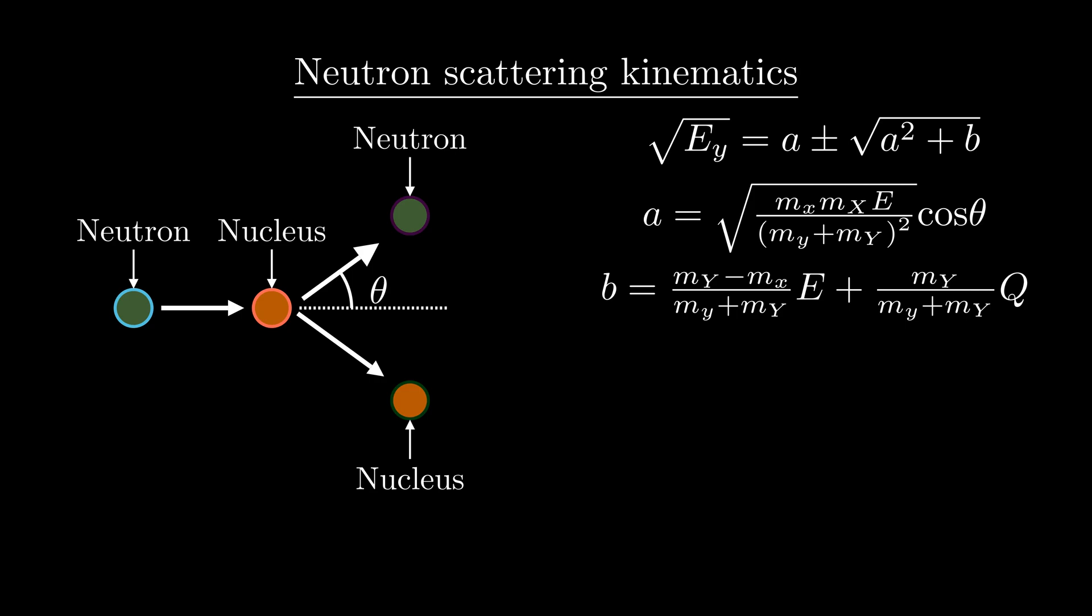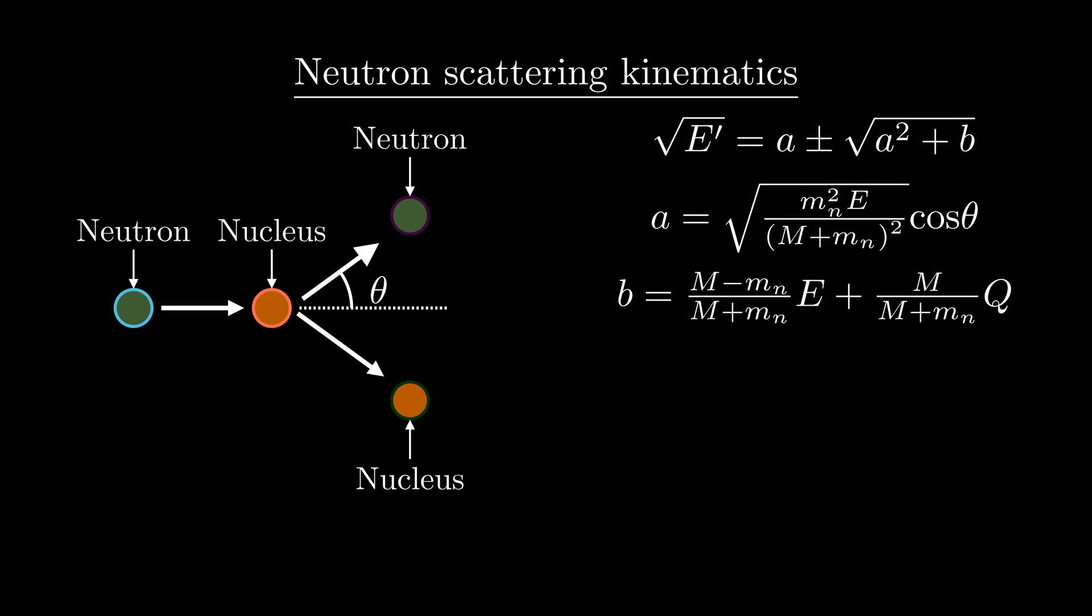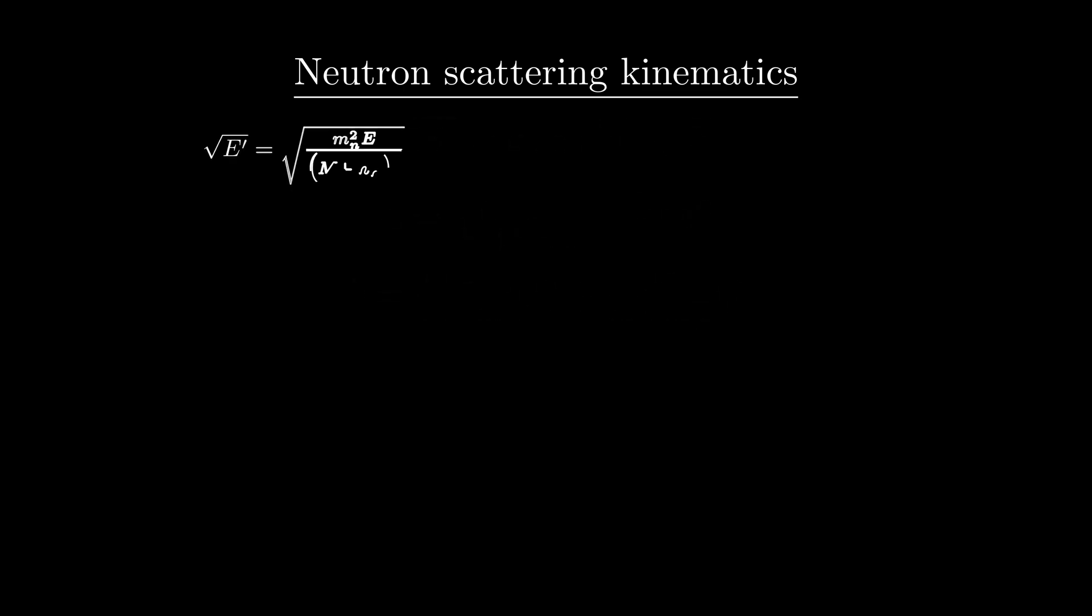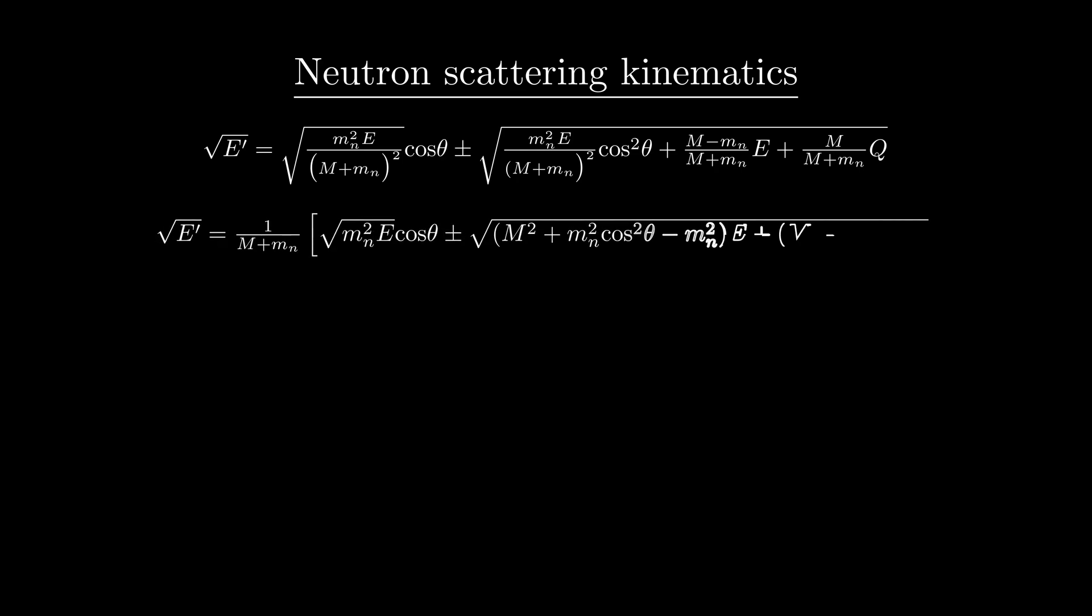m sub n is our symbol for the mass of a neutron, and big M is the symbol for the mass of the nucleus. Let's plug in our new forms for a and b, and we get this ugly equation, but we can do a little simplification to get things to look a bit nicer. First, we can factor out a 1 over M plus m sub n from the right hand side of the equation, and then from there we can square both sides to get an expression for E prime, the outgoing neutron energy.